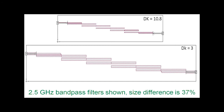These two filters have the same filter response — same center frequency, same bandwidth, same Q as much as possible. What's interesting is the coupling gap between the resonators is much greater on the higher-Dk material than on the lower-Dk material. This is because higher-Dk materials condense the fields, making the coupling between resonators much tighter. To get the same coupling, you need a slightly larger gap on the high-Dk material to reduce coupling and bring it in line with the lower-Dk design.